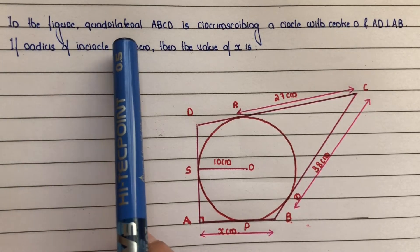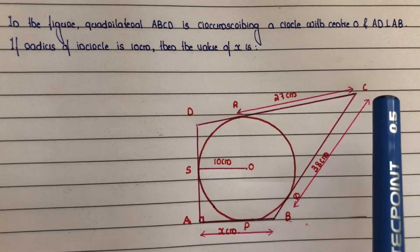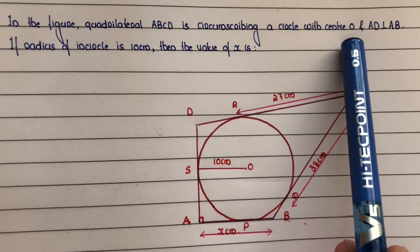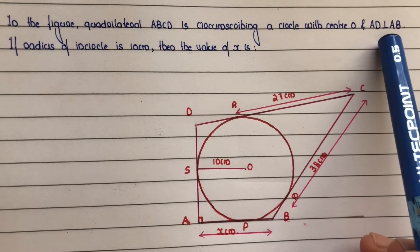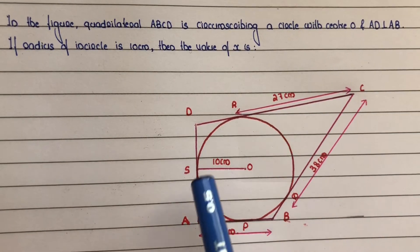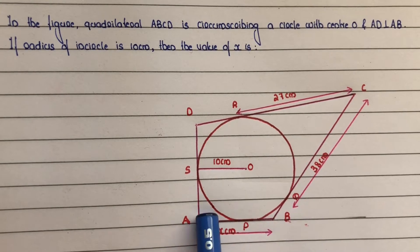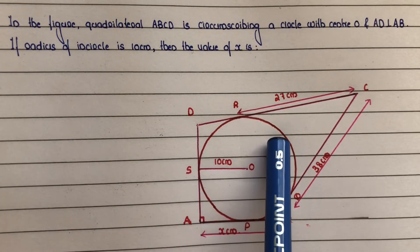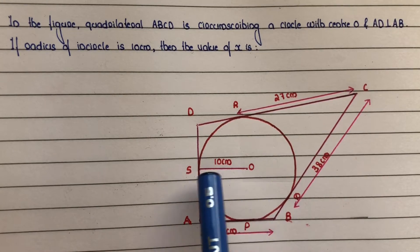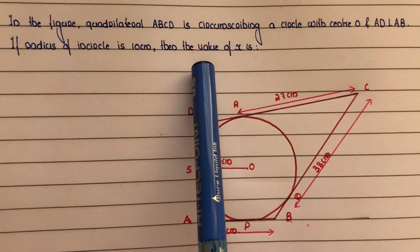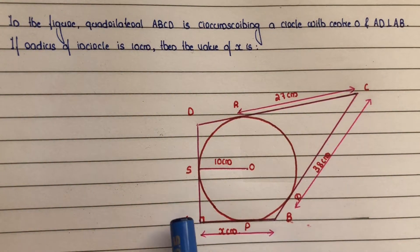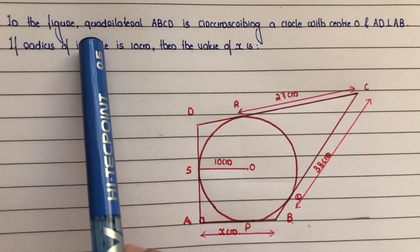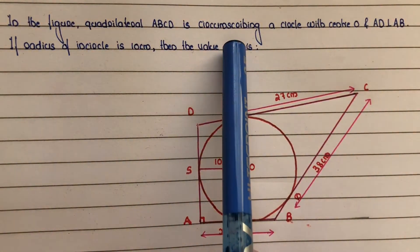In the figure, quadrilateral ABCD is circumscribing a circle with center O, and AD is perpendicular to AB. The angle is 90 degrees. If the radius of the inscribed circle is 10 cm, then the value of X — that is, the length of AB — is to be found. Quadrilateral ABCD is circumscribing a circle, meaning the circle fits inside the quadrilateral.